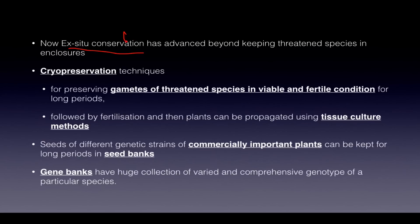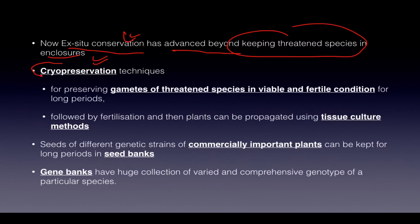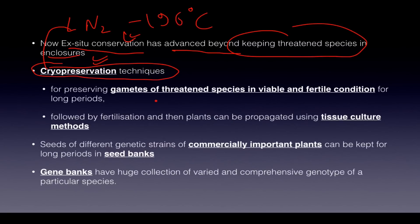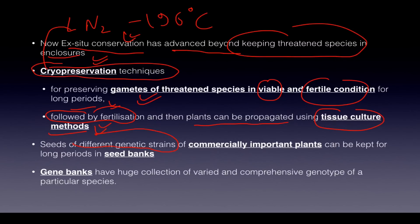Ex-situ conservation has advanced beyond zoos, botanical gardens, and herbariums. It now includes cryopreservation techniques — using liquid nitrogen at minus 196 degrees Celsius — to preserve gametes of threatened species in viable and fertile conditions for long periods, followed by fertilization. Plants can be propagated using tissue culture methods. Seeds of different genetic strains of commercially important plants can be kept for long periods in seed banks. The ultimate form is the gene bank, which stores a huge collection of varied and comprehensive genotypes of an entire species.